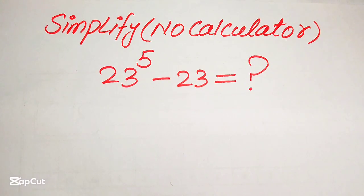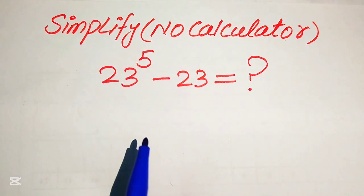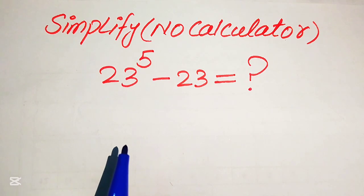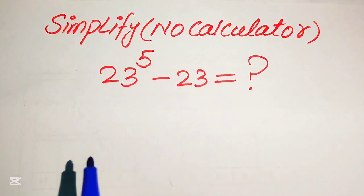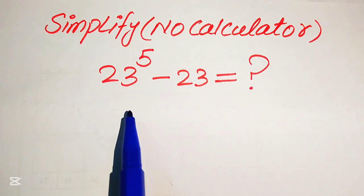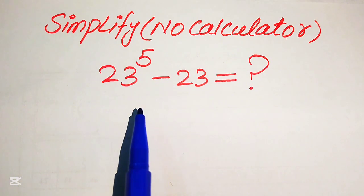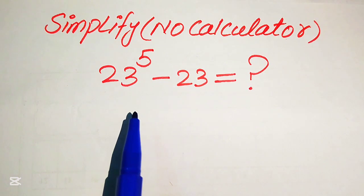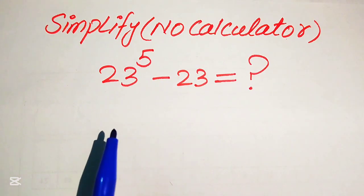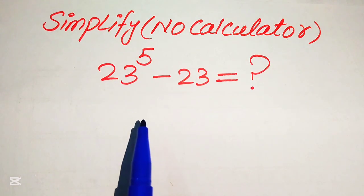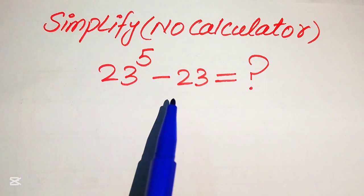Hello everyone, today I want to show you how to simplify this nice algebraic expression without using the calculator. So if you have 23 to the power of 5 minus 23, we write this algebraic expression into the lowest form, but calculator is not allowed — it means that we will show you all of the working on this paper.